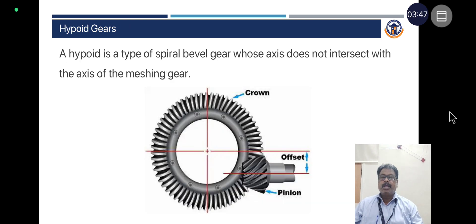Hypoid gears: A hypoid gear is a type of spiral bevel gear whose axis does not intersect with the axis of the meshing gear. As seen in the diagram, the pinion axis is not parallel to the axis of the crown gear — there is an offset.